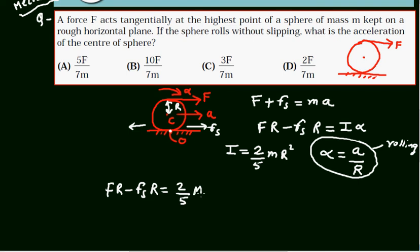Or F minus F_s equals 2/5 M times A. From equation one, or we can say this is equation two.